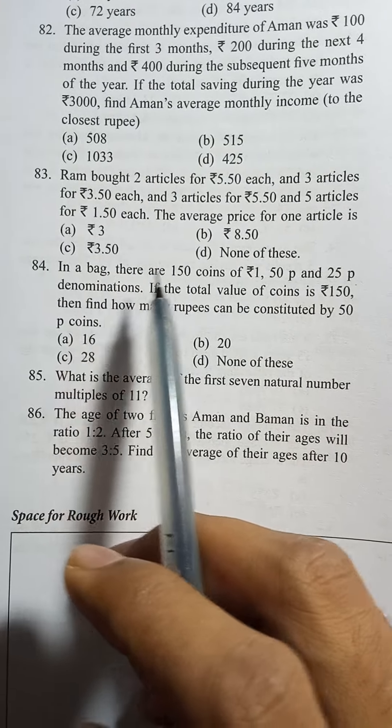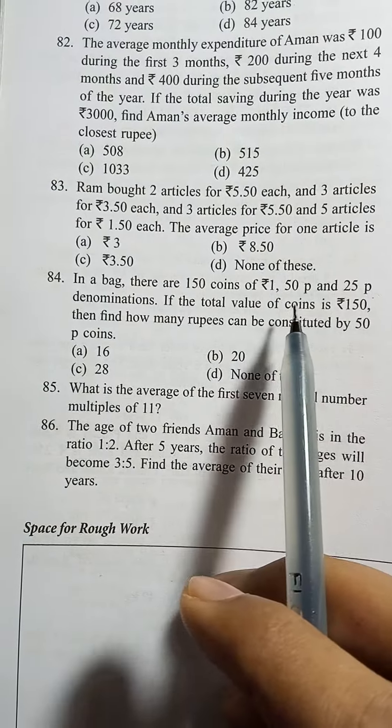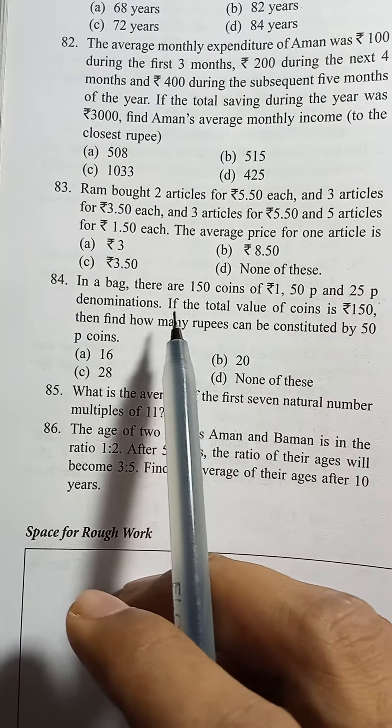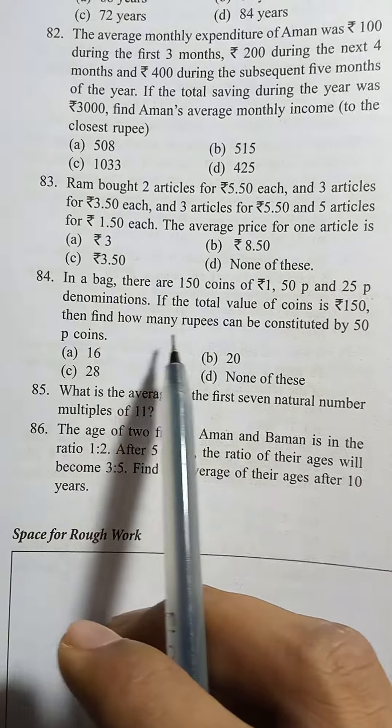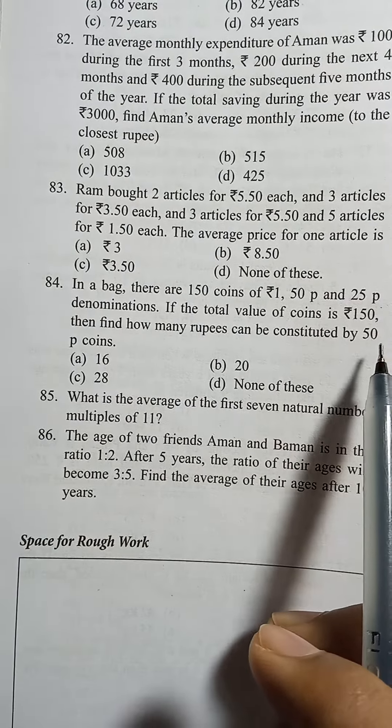In a bag, there are 150 coins of rupees 1, 50 paise and 25 paise denominations. If the total value of the coin is rupees 150, then how many rupees can be constituted by 50 paise coins?